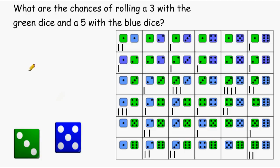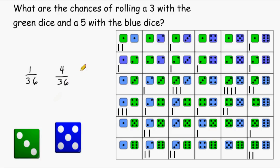Before even rolling the dice, we expected an outcome of a green 3 and a blue 5 just one time out of 36 rolls. This is the theoretical probability. However, after rolling the dice 36 times, we came up with that result 4 out of the 36 times, which can be reduced to 1 out of every 9 times. So this event actually occurred 4 times more than we actually expected it to.